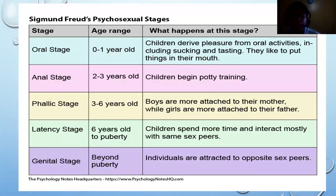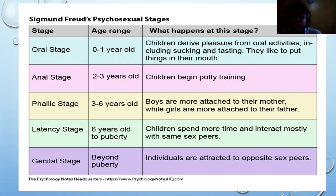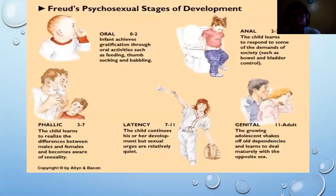To summarize: in the oral stage, children put things in their mouths and taste them. In the anal stage, they begin body training. In the phallic stage, boys and girls begin attachment to other persons. This is followed by the latency stage around puberty, and finally the genital stage.